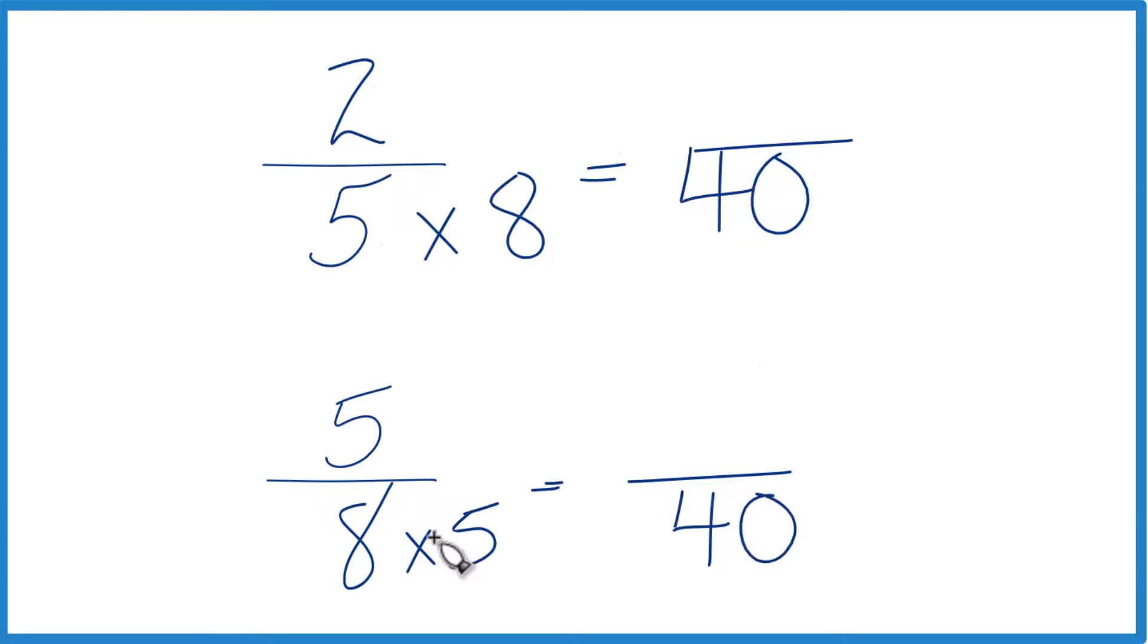But we can't just multiply the denominator by 5. We need to also multiply the numerator here by 5. 5 divided by 5 is 1, so we're just multiplying by 1. We don't change the value, just the way it's represented. 5 times 5 is 25.